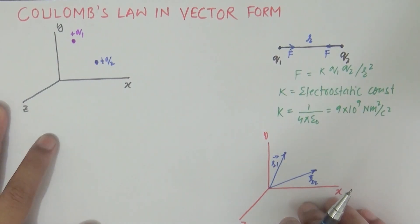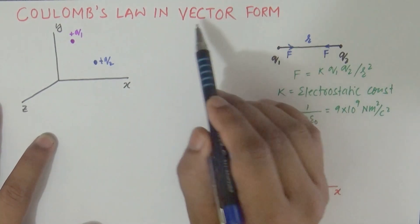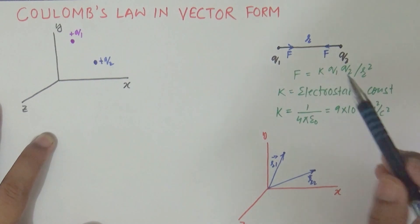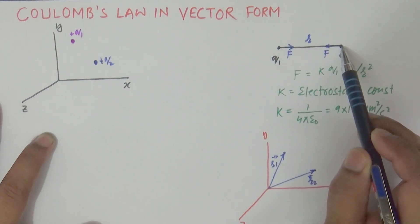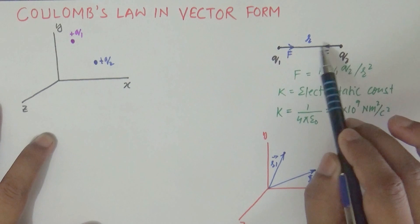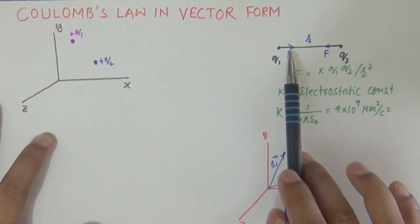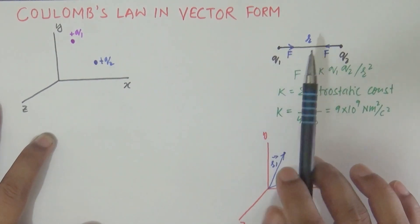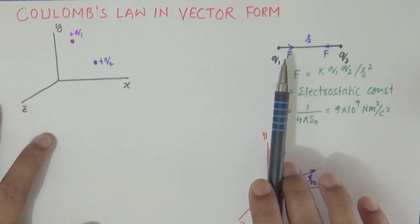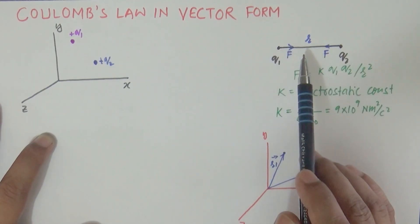Today we will start with Coulomb's law in vector form. To understand it, we must first understand Coulomb's law in scalar form. It tells us that if two charges q1 and q2 are separated by some distance, they may attract or repel each other. Whether the force is attractive or repulsive depends on the nature of the charges — if both charges are of the same nature, the force is repulsive.